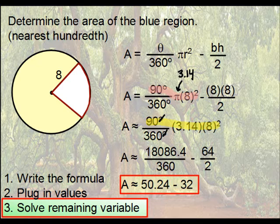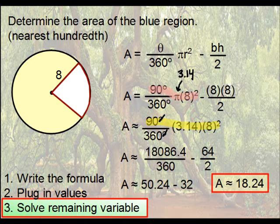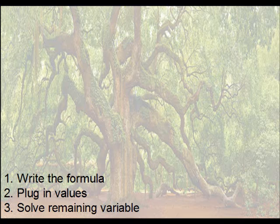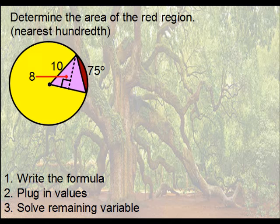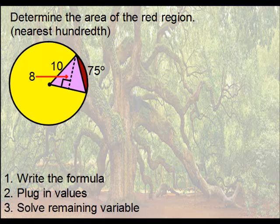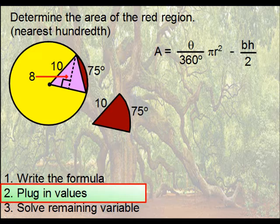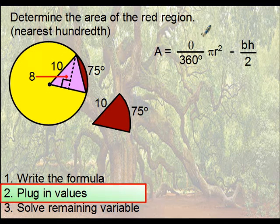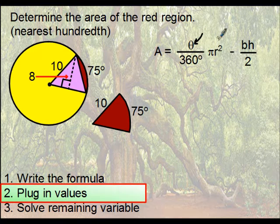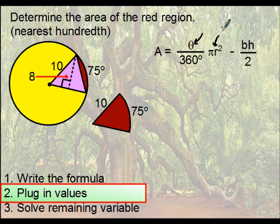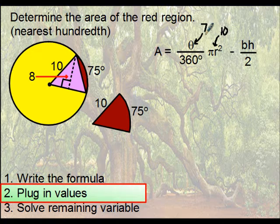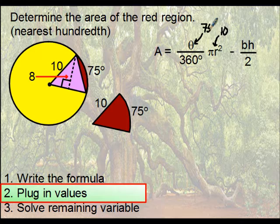Here is another one. Determine the area of the red region. Again, write your formula first, and then let's go ahead and plug in our values. For the sector, you should recognize that the central angle is 75 degrees, so that's going to go right here. The radius is 10, so we'll plug that in for r, and doing so will give us 75 degrees over 360 degrees times pi r squared, only r is 10.